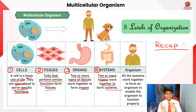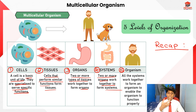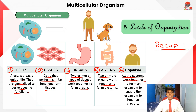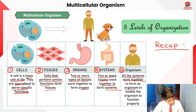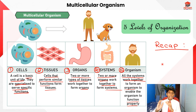The fifth and final level is the organism. All the systems work together to form an organism and enable it to function properly. That completes the quick recap of the five levels of organization in multicellular organisms.